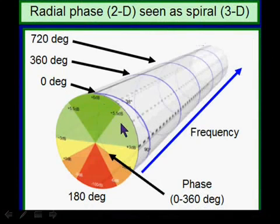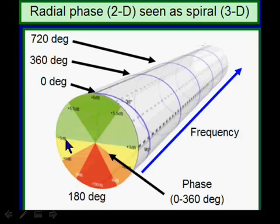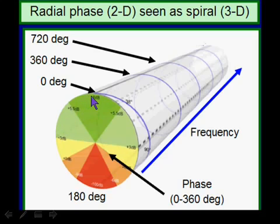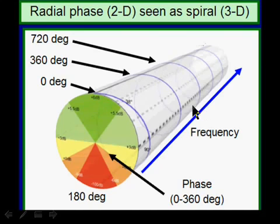We typically visualize phase as a 0 to 360, or 0 to plus or minus 180 degree circular phenomenon, but there's more to it than that. When you work around the circle and arrive back at 360 degrees, you're not in the same place as 0 degrees. In fact, you're a wavelength behind, as shown here by the spiral function, each spiral representing one wavelength behind.